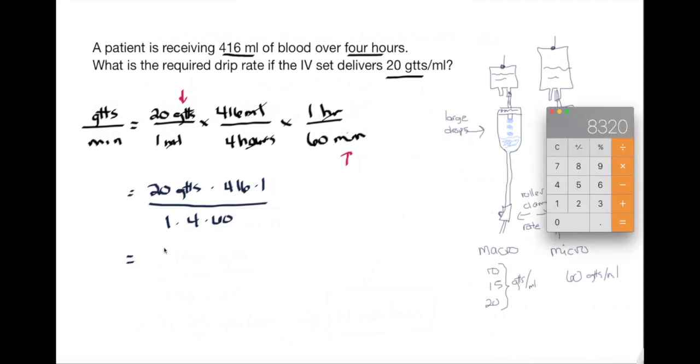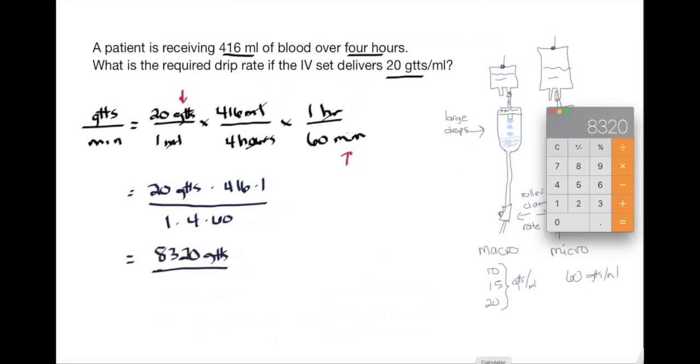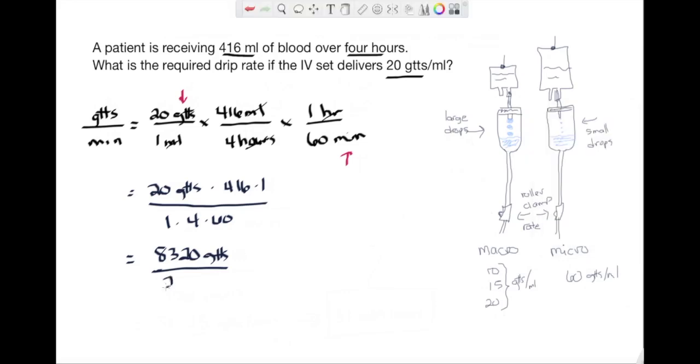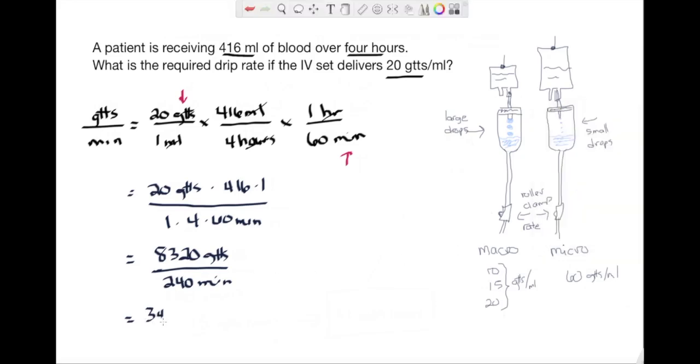And you can see 20 times 416 is 8320 drops, and I'm going to divide that by 240 minutes. I'll put my units back up here. Furthering this calculation, you can see that the final answer is 34.66 drops per minute. Again, we want to round to the nearest whole number, so this would be 35 drops per minute.